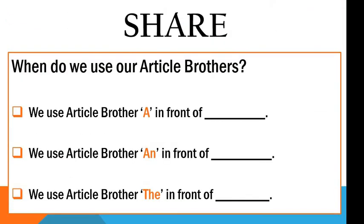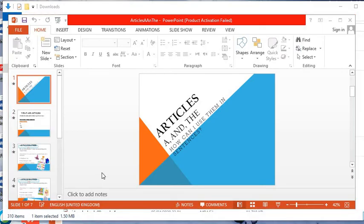Think parent share: when do we use our article brothers? We use article brother A in front of a singular noun that starts with a consonant letter. We use article brother AN in front of a singular noun that starts with a vowel letter. And THE can be used in front of any letter of the alphabet. This is the end of our video. Hope you all will enjoy it. Thank you.